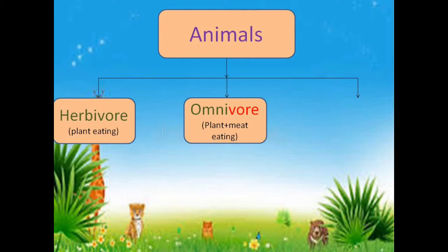Anything that comes from animals and is eaten other than plant is known as meat. Omnivores are the ones that eat plants as well as meat.